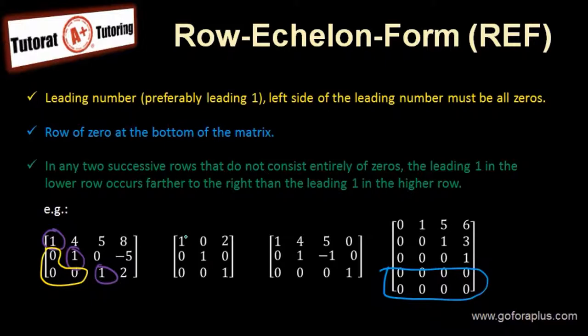Now what does it mean? Let's look at this example. Leading 1 is right here. The second row leading one must be farther to the right of the first row, which is farther right in this case of the first row. Now same thing with the third row, it's farther right.